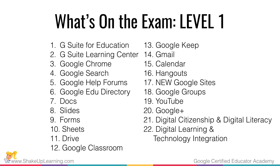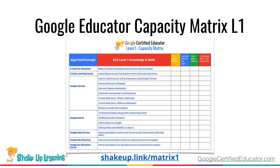I went through all of the course content, all of the training center content, and everything I've learned from taking the level one exam, and I created the level one capacity matrix. It's several pages long and it's a free download at shakeup.link/matrixone. You can self-assess to find out what you already know and where you may have gaps before you take the exam. Inside the matrix I'm not only giving you the skill but also a link to learn it if you don't already know it.